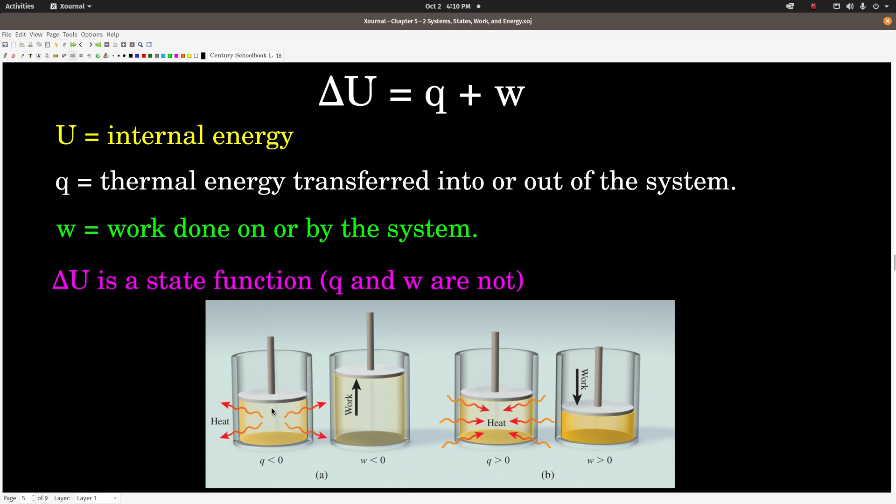So like I said, delta U is a state function, although neither q nor w is a state function. Examples of what I'm talking about here: if we take a gas in a cylinder with a piston in here - that's this picture on the far left - if we press down on it, it heats up and releases energy to the surroundings. q is negative because it lost energy. If we release some pressure on this piston and allow the gas to push it up, work is done by the system. It does work on the surroundings, it pushes out, and w is negative.